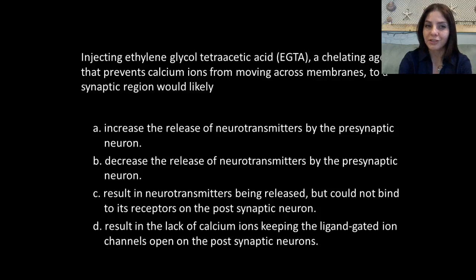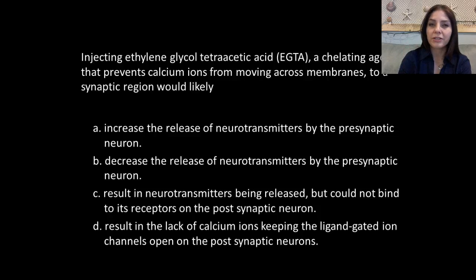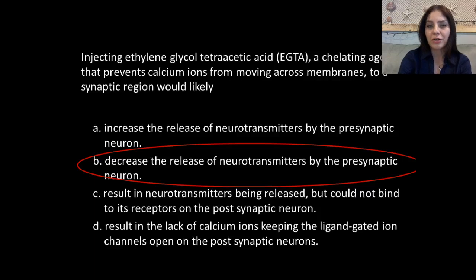I'm going to leave you with a question. If you injected ethylene glycol tetraacetic acid — a chelating agent that prevents calcium ions from moving across the membranes to a synaptic region — what would most likely happen? If you said it's going to decrease the release of neurotransmitters by the presynaptic neuron, then you would be correct. See you guys next time.